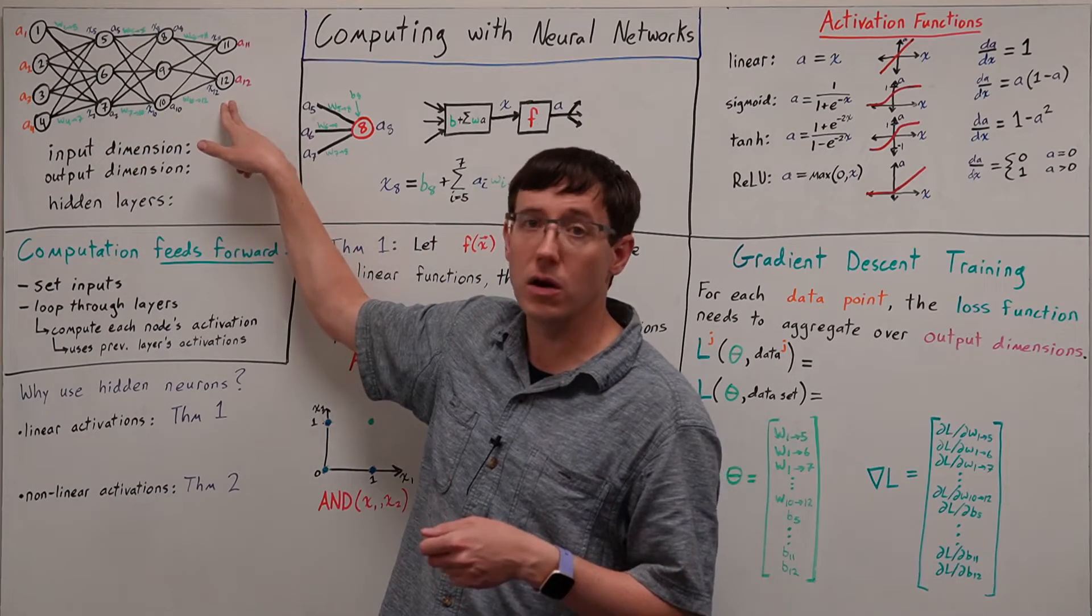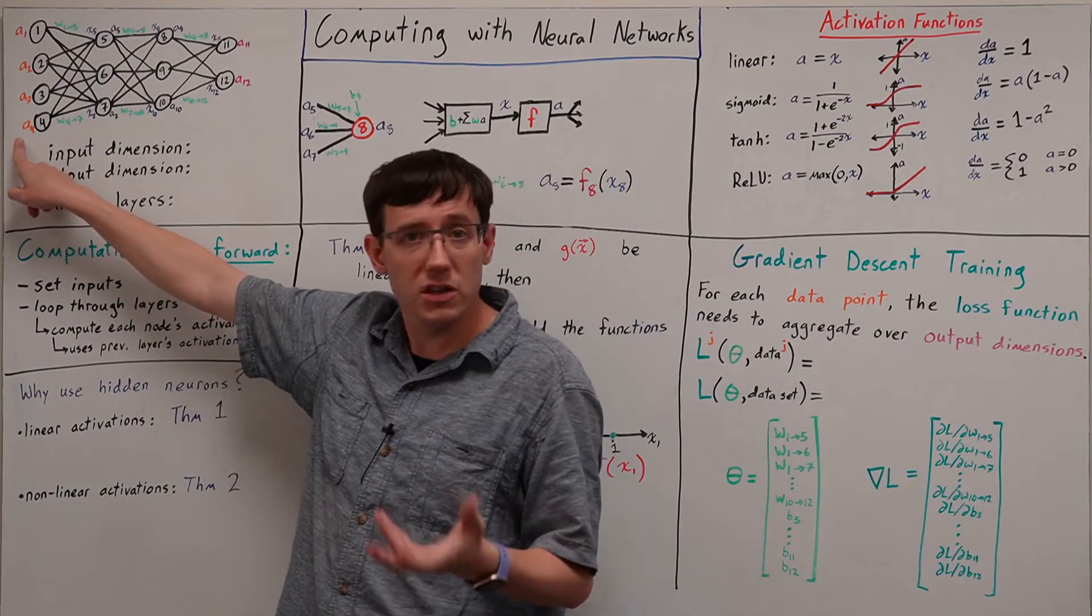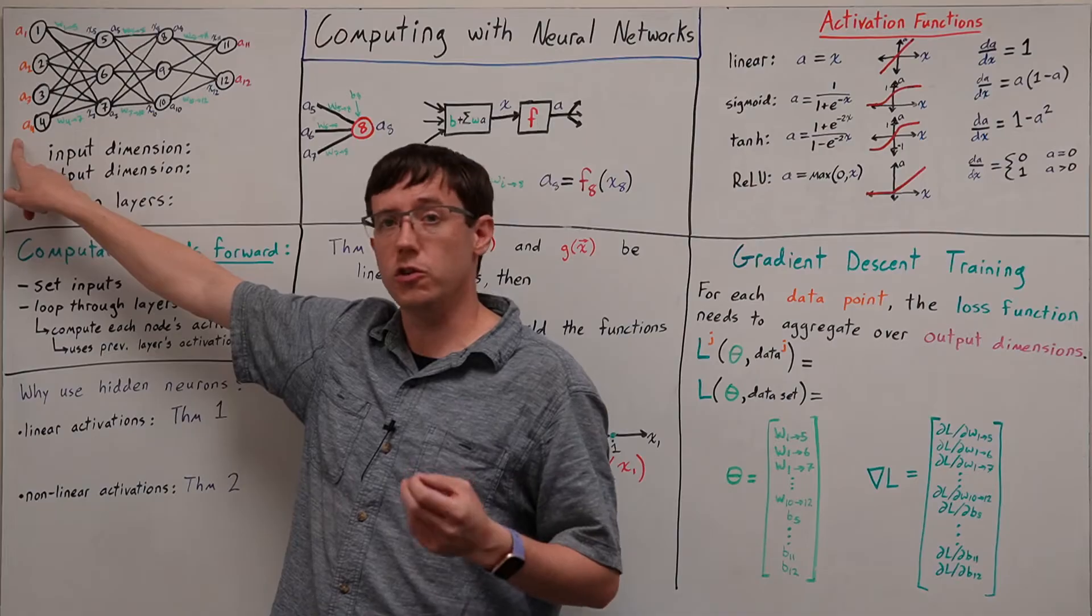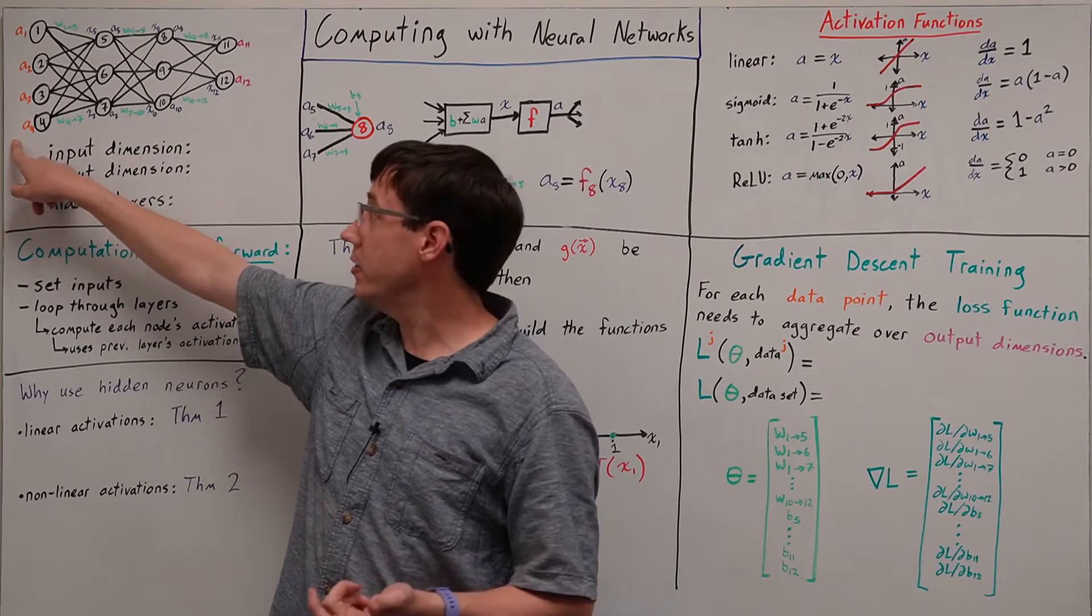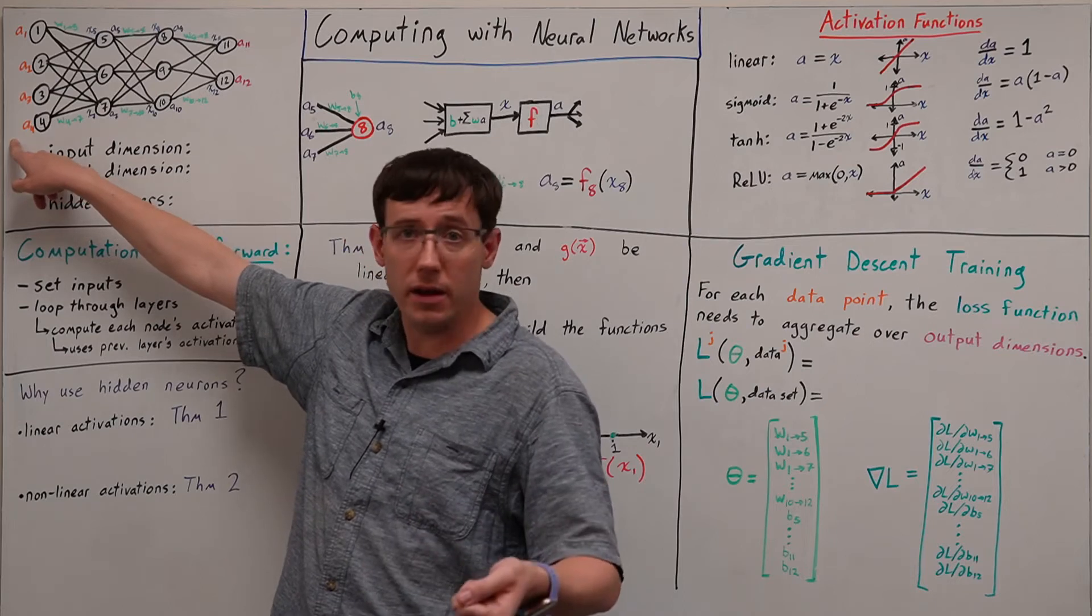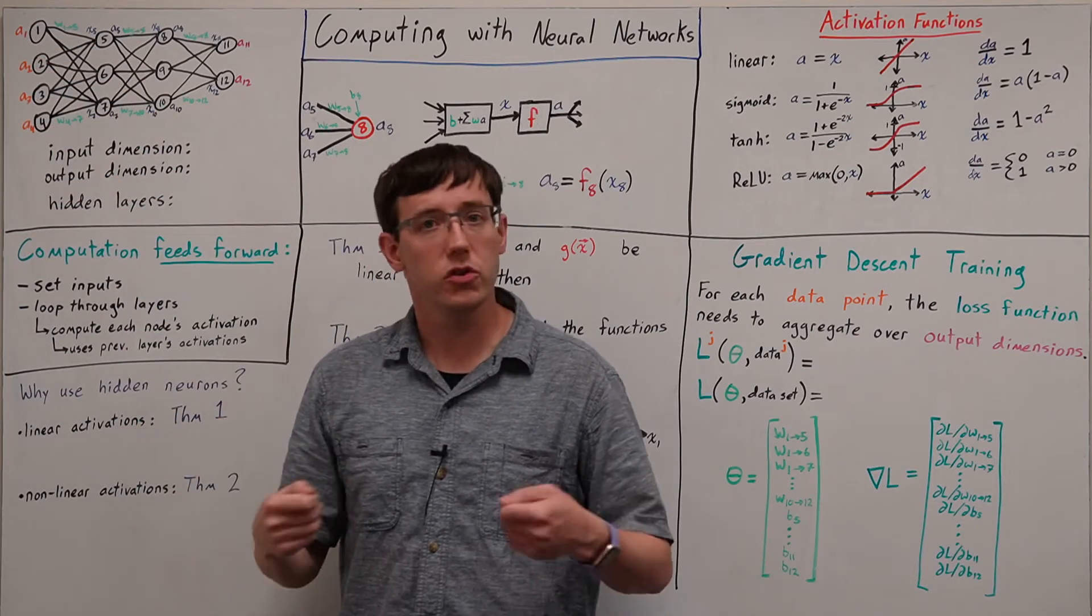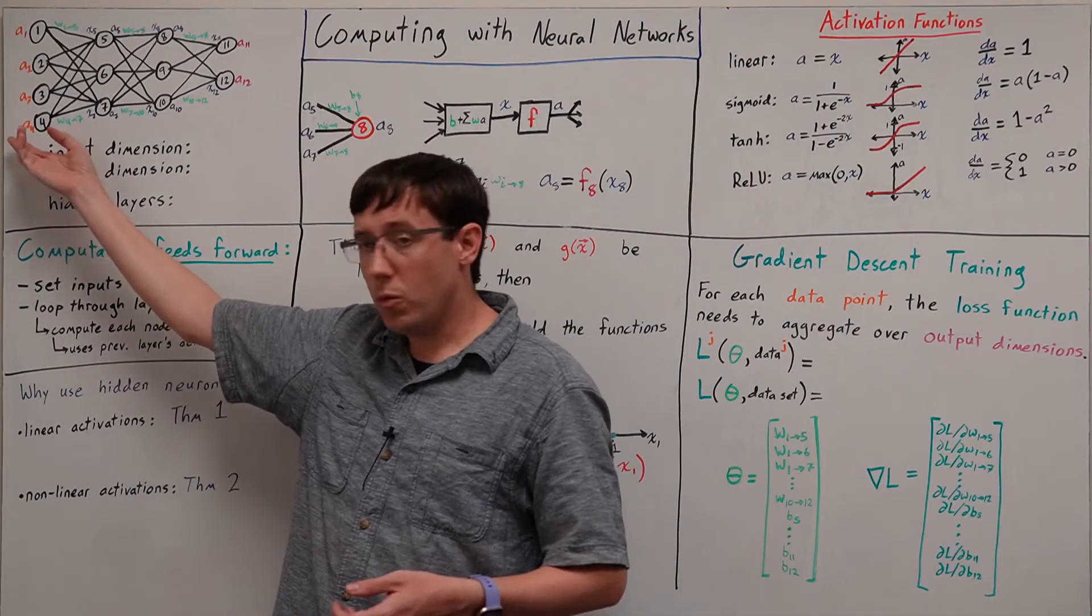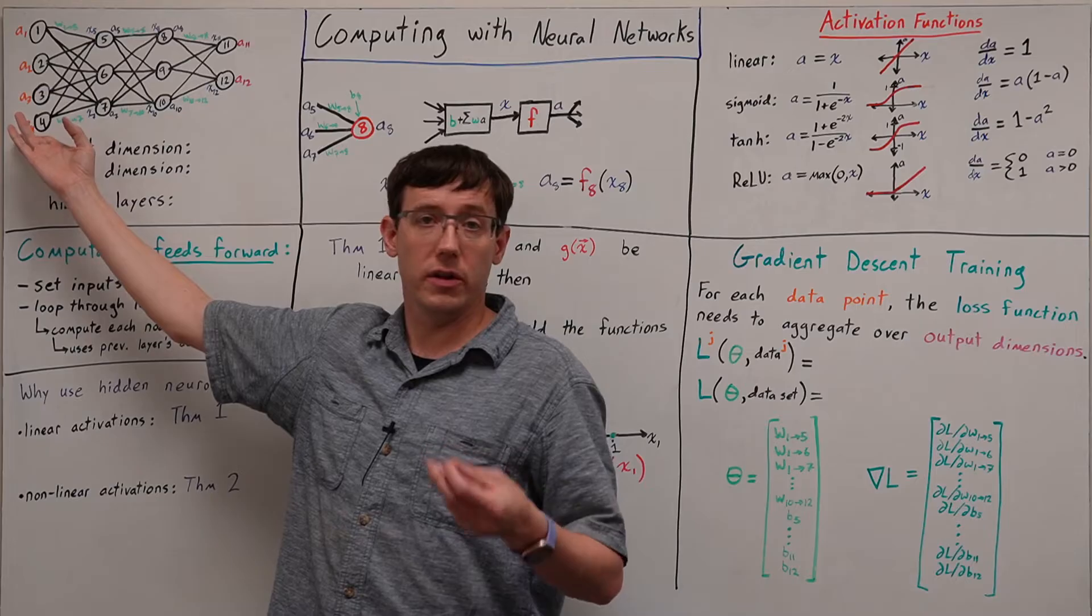All of the subsequent nodes in the hidden layers and the output layer are neurons performing this sort of computation. Because the job of these input nodes is just to store the point on which we're making a prediction, the dimension of our data directly determines the number of inputs to our network.